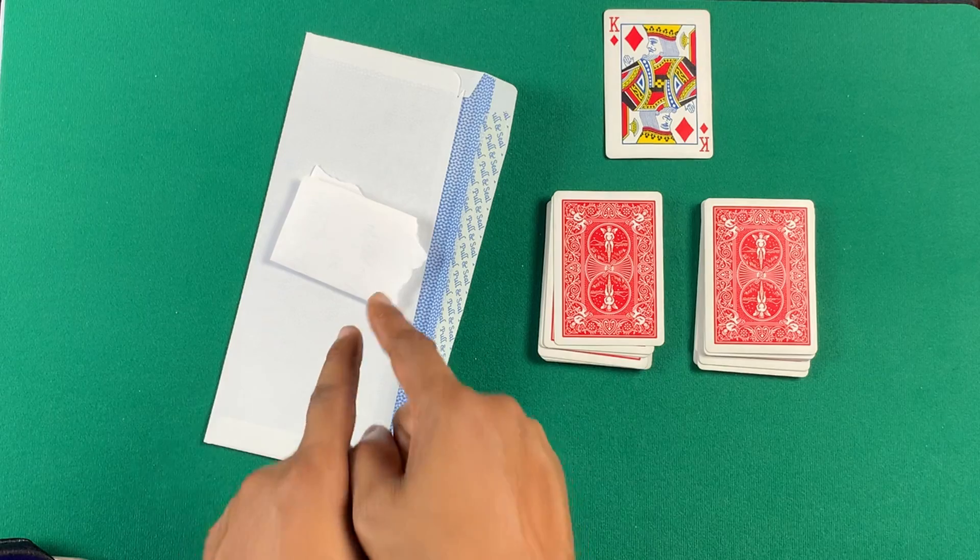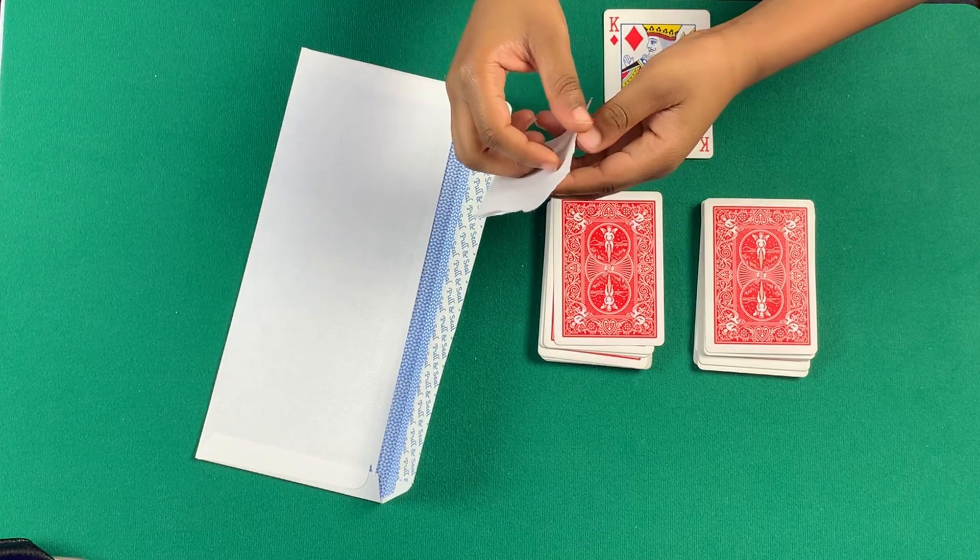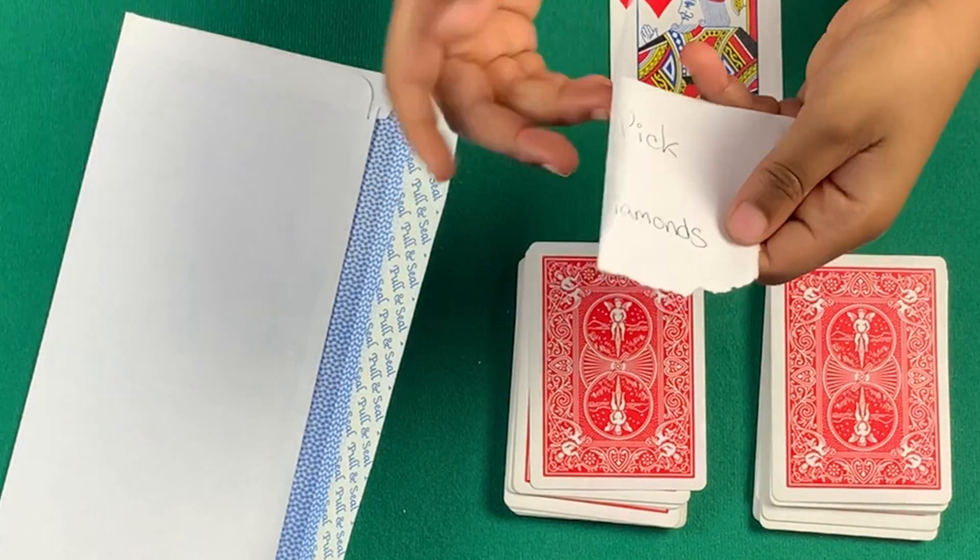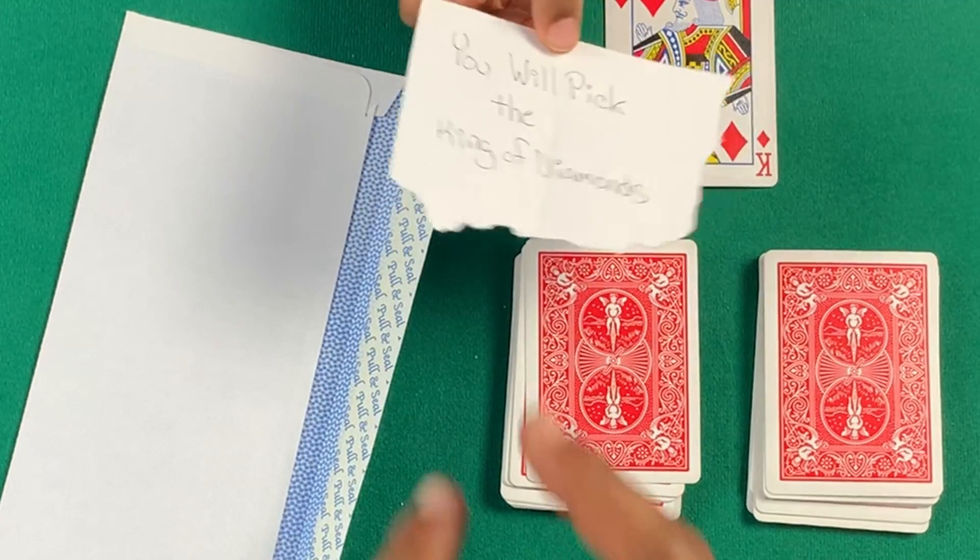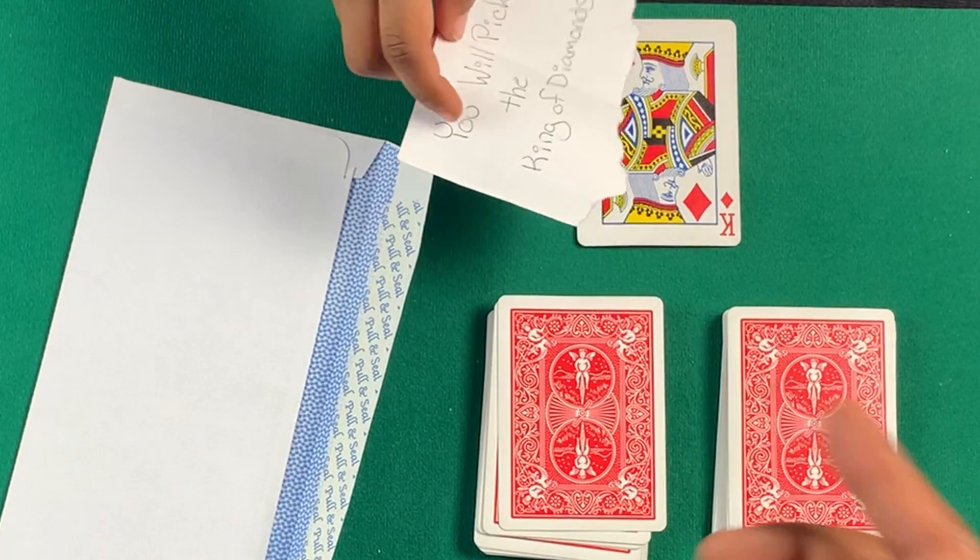Okay. Now, I wrote a prediction here. Do me a favor and open up that prediction. And it says, you will pick the king of diamonds. Did you pick the king of diamonds? Yeah. That's crazy, right?